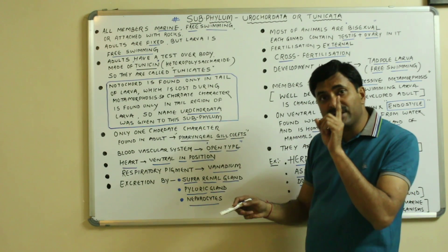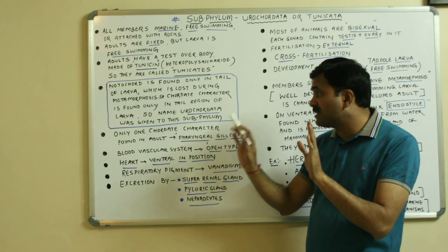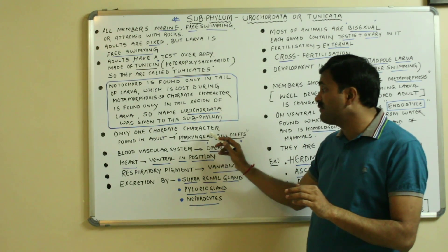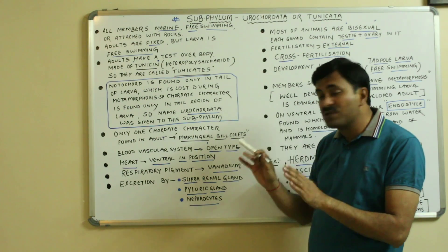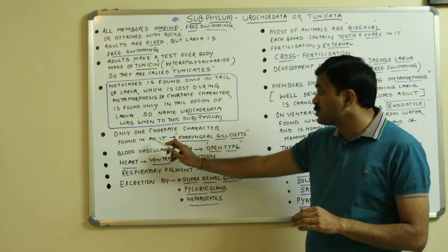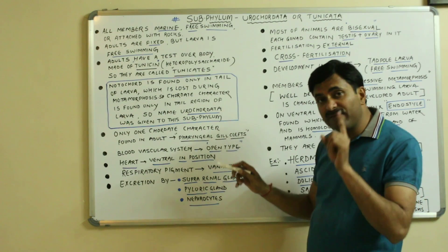So only one chordate character will remain in the adult and that is known as the pharyngeal gill clefts. Otherwise, all the chordate characters are lost in the adult. So they have pharyngeal gill clefts in the adult.